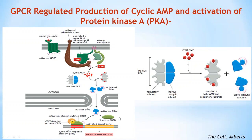Cyclic AMP activates the gene encoding the peptide hormone somatostatin. The regulatory region of the somatostatin gene contains a short DNA sequence called the cyclic AMP response element (CRE), also found in the regulatory regions of many other genes activated by cyclic AMP. This sequence is recognized by a gene regulatory protein called cyclic AMP response element-binding protein (CREB). Activated PKA phosphorylates a single serine residue on CREB, and phosphorylated CREB then recruits a transcriptional co-activator called CREB-binding protein (CBP), which stimulates transcription of target genes. CREB can thus transform a short cyclic AMP signal into a long-term change in a cell, playing an important role in memory and learning.